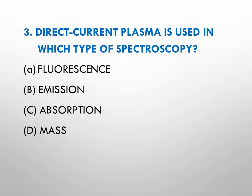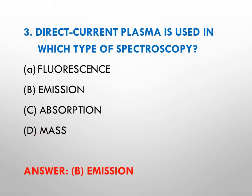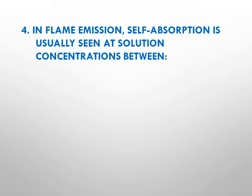Question number three: direct current plasma is used in which type of spectroscopy? Options: A is fluorescent spectroscopy, B is emission spectroscopy, C is absorption spectroscopy, while D is mass spectrometry. The right answer is B, that is emission spectroscopy. Direct current plasma is being used as an atomizer in emission spectroscopy.